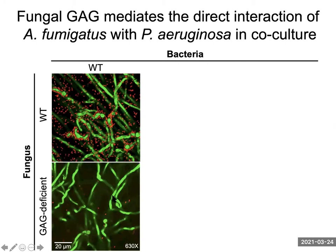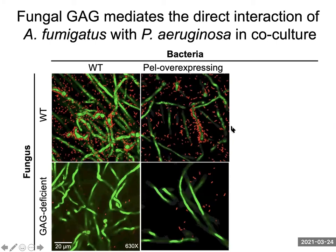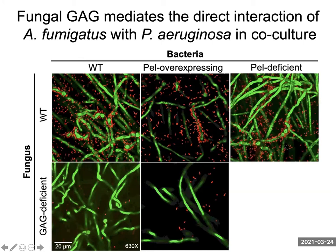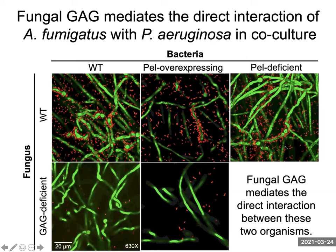To confirm that the loss of this phenotype was driven by GAG deficiency and not low levels of PEL, we investigated the possible role of PEL in these direct interactions using a bacterial strain that overexpresses PEL exopolysaccharide. Like the native PEL-expressing bacteria, these PEL-overexpressing bacteria still clustered around the wild-type fungi. However, with the GAG-deficient strain, they failed to adhere to the hyphae despite the overproduction of PEL. To further confirm that GAG — and not PEL — participates in these interactions, we imaged a bacterial strain with abolished PEL production and observed that these bacteria were still able to adhere to the fungus, suggesting that fungal GAG mediates the direct interactions between these two organisms and that PEL does not have a role in direct interactions.